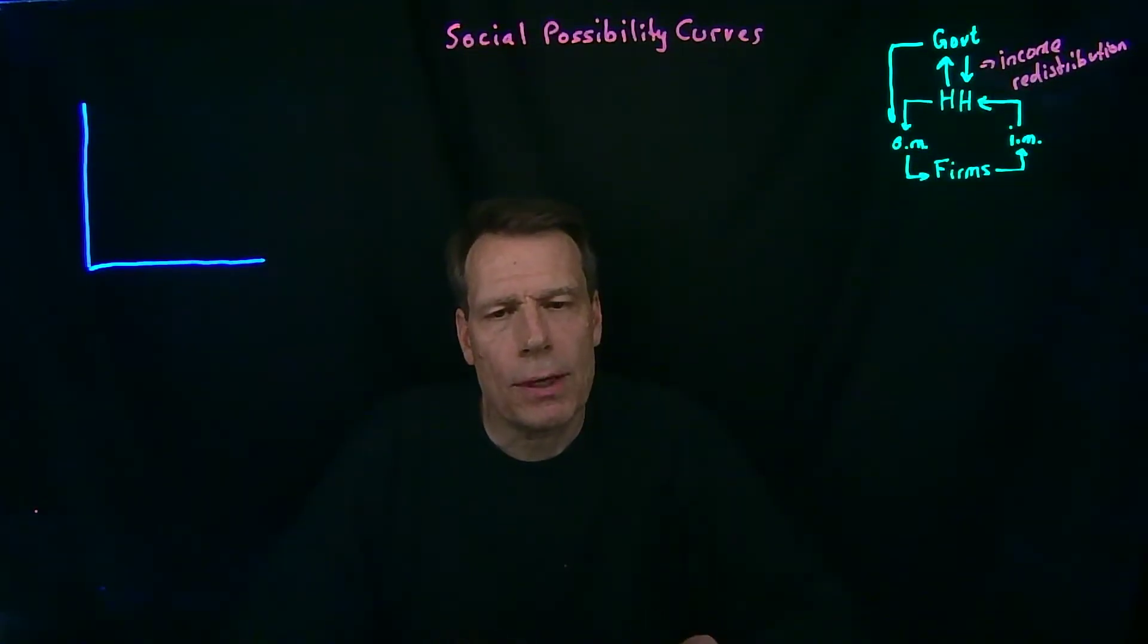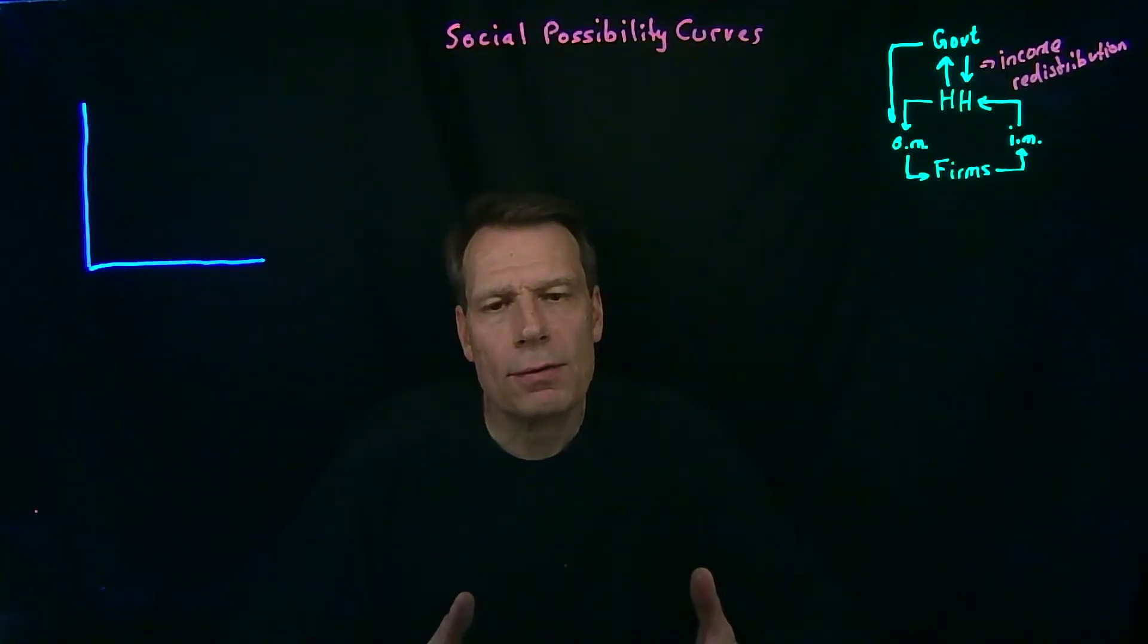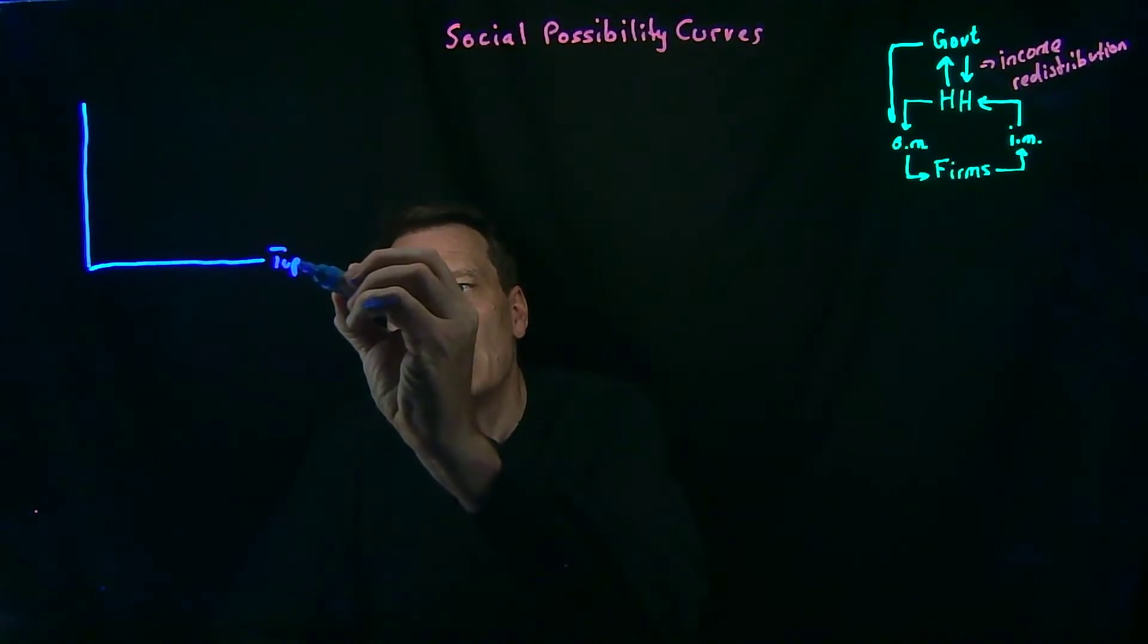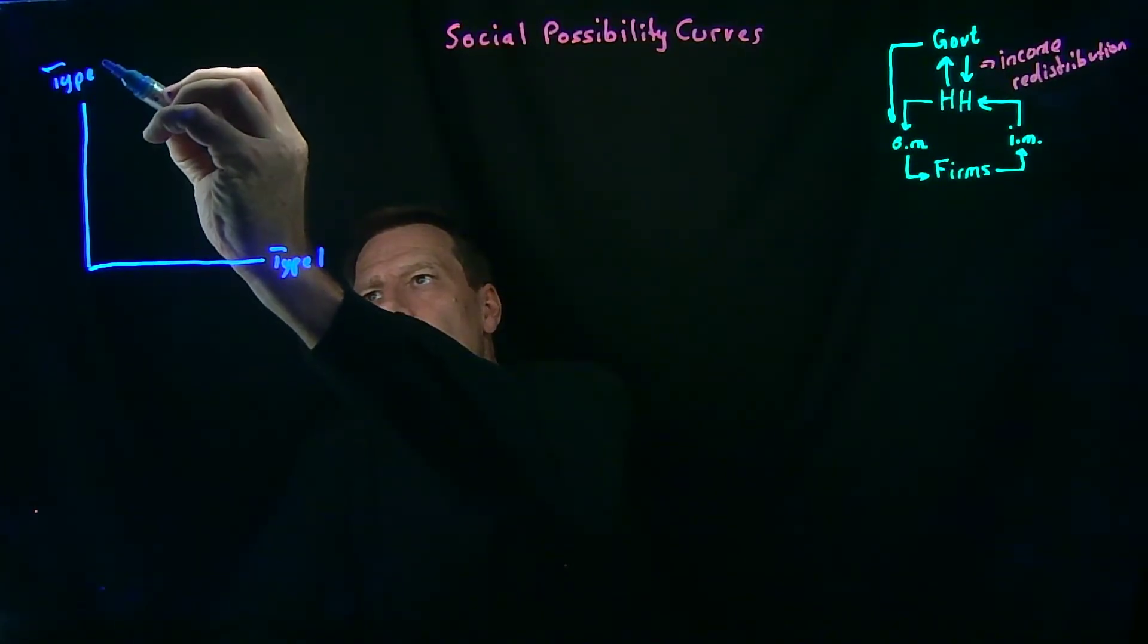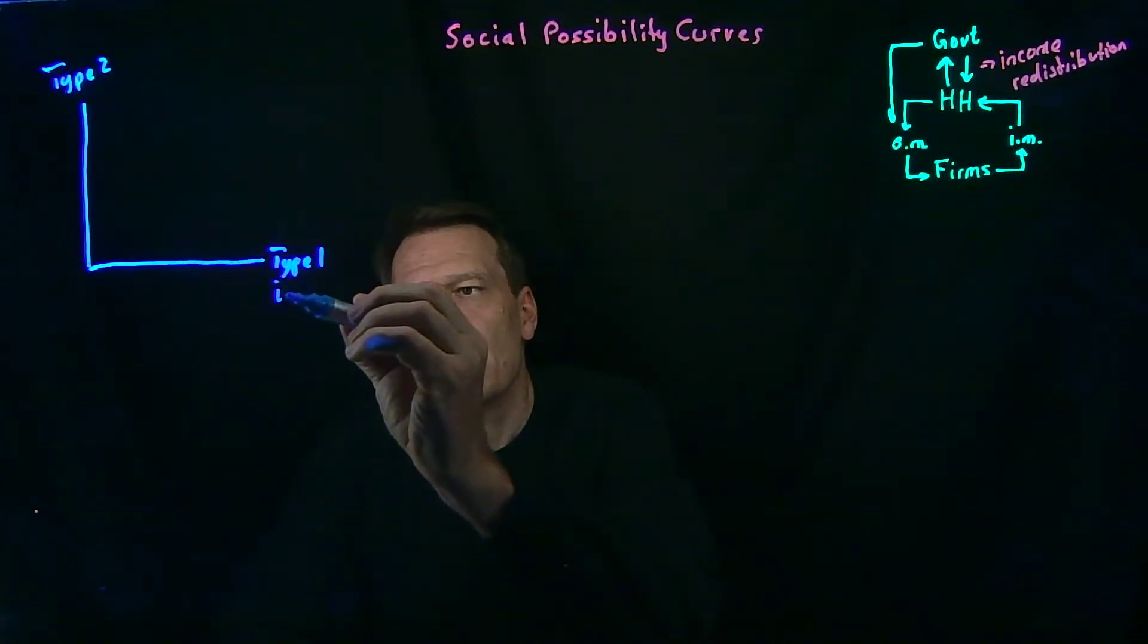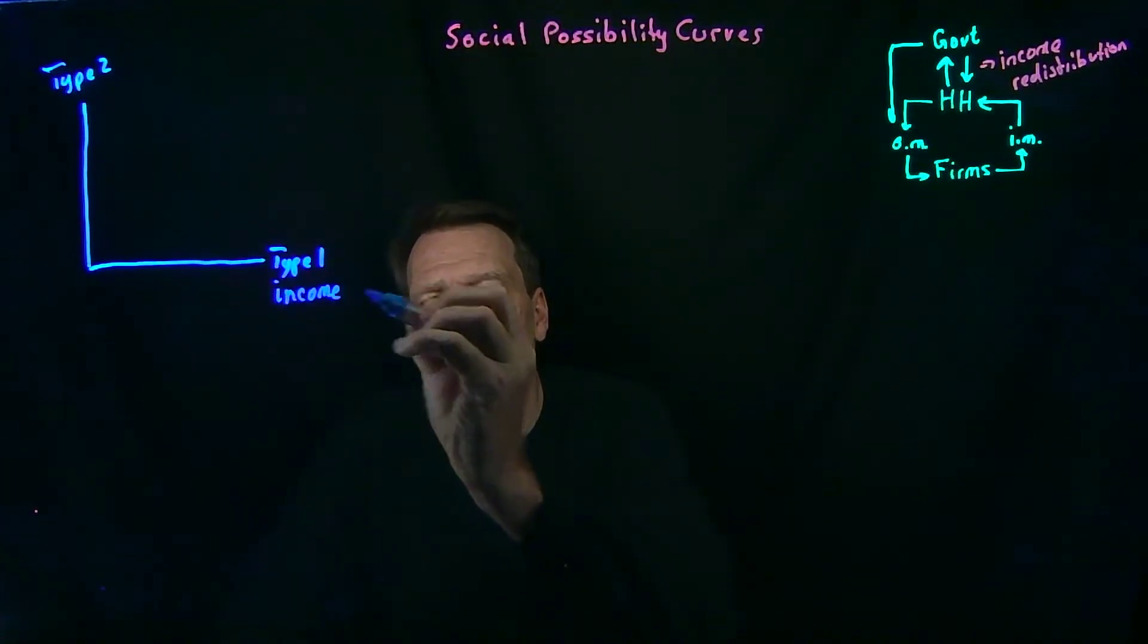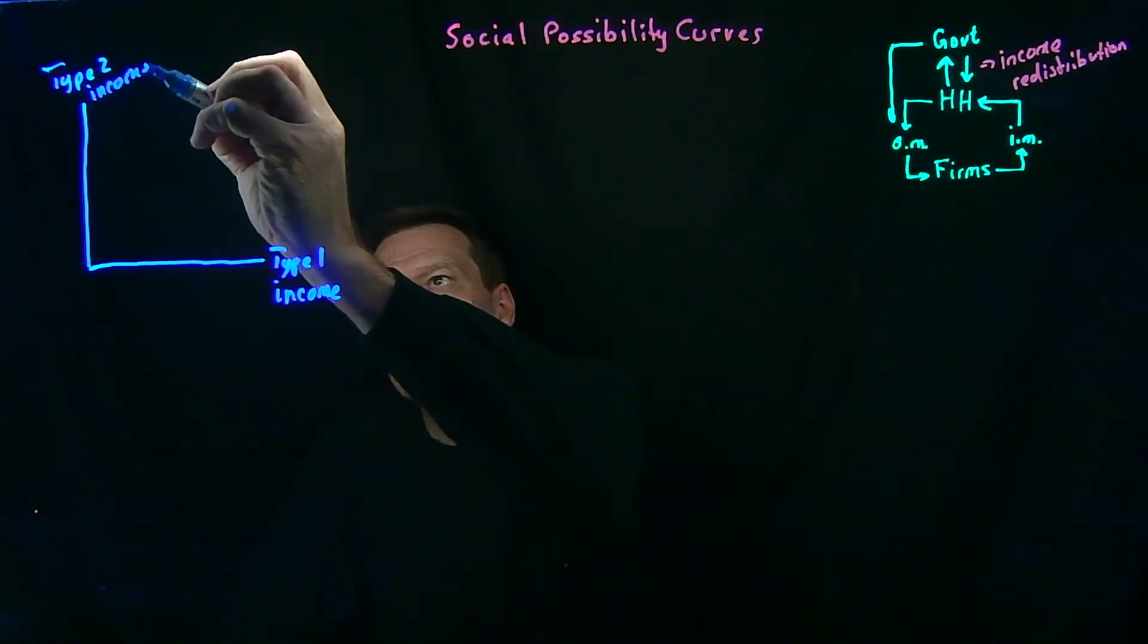But now we're going to ask a different question. Instead of putting goods on the axes, we're going to put the well-being of different people on the axes. So we'll assume that there are two types of people, type 1 and type 2. And since we can't really measure well-being very well, we're instead going to use something that we can actually measure. We could use income or consumption or wealth, but let's just use income. So on the horizontal axis we'll have the income for type 1 people, and on the vertical axis we'll have the income for type 2 people.